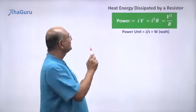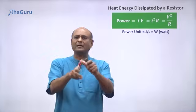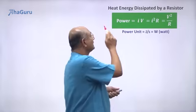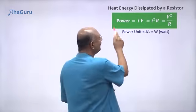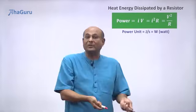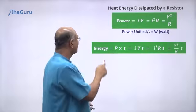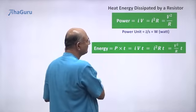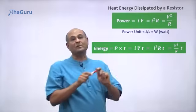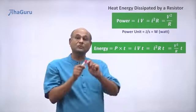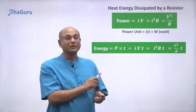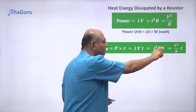Let us now look at the heat energy dissipated by a resistor. When you supply power to a resistor, the resistor heats up — the power supplied is converted to heat energy. If we wait for T seconds, the energy supplied is power times time T: IV×T, or I²R×T, or (V²/R)×T. Energy is power into time. The unit of energy is joules, but because the watt is so important, we sometimes write joules as watt-seconds, since one watt-second equals one joule.